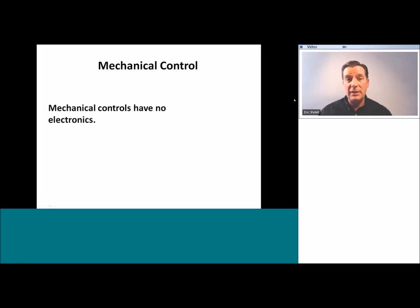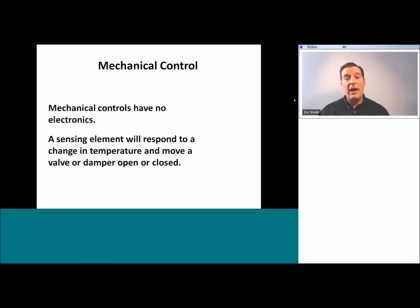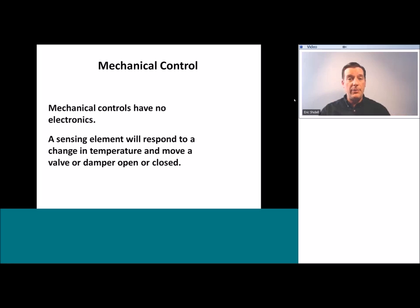Mechanical controls have no electronics. The next phase of evolution beyond manual control was mechanical control. Mechanical controls have a sensing element that responds to a change in temperature, and it will physically move a valve or damper open or closed — duplicating the action of manual controls. In the manual control, the sensing element was you, your physical sensation. In a mechanical control, the human sensing element is replaced by a mechanical one that takes over that motion in response to temperature.